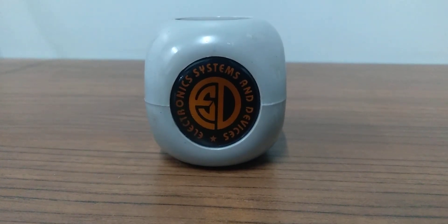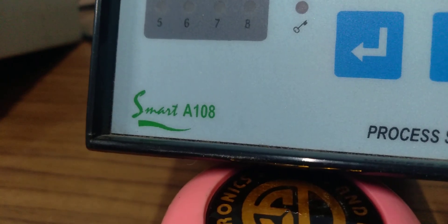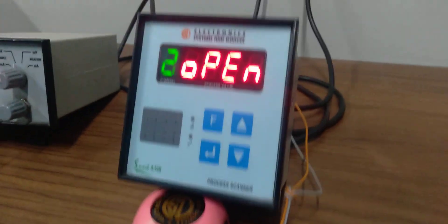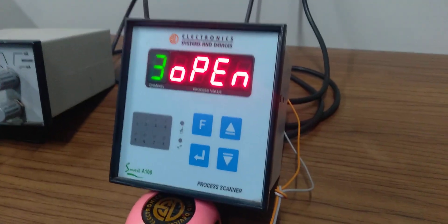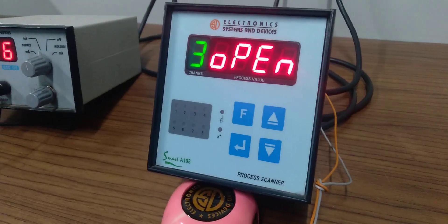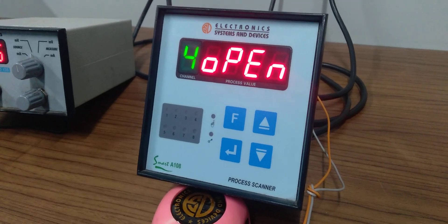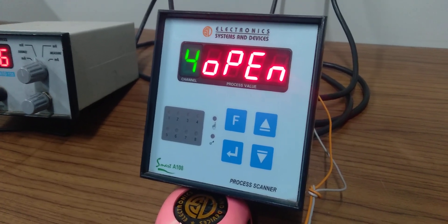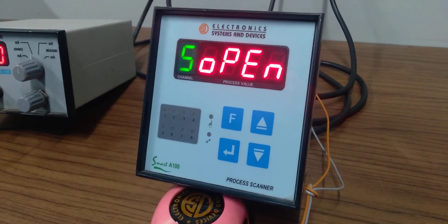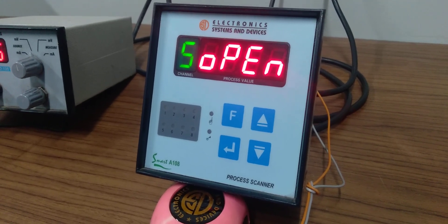Hello, welcome to product demonstration for Electronic Systems and Devices. The product we are covering today is a process scanner. The model is Smart A108, an 8-point common alarm model. Common alarm means there will be one relay output for the alarm and one for the trip. Alarm is for the lower side, trip is for the higher setpoint side.